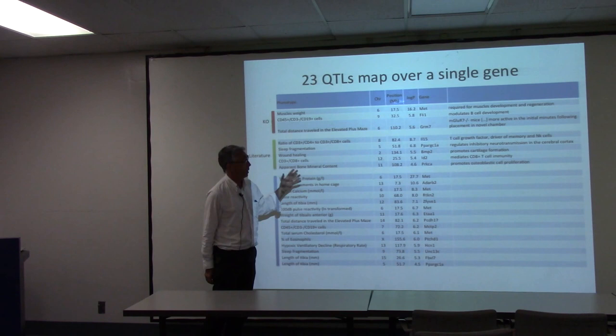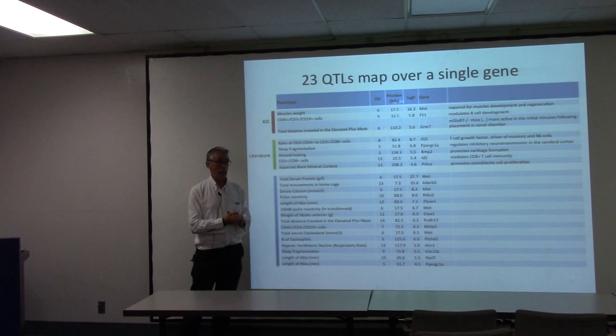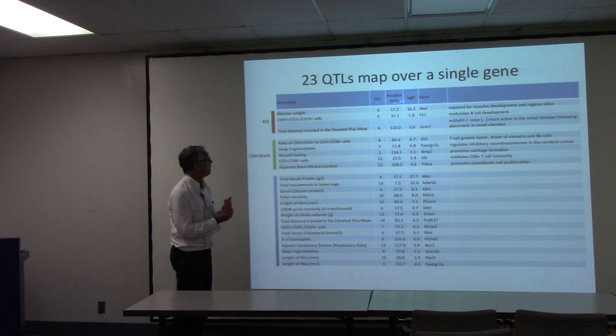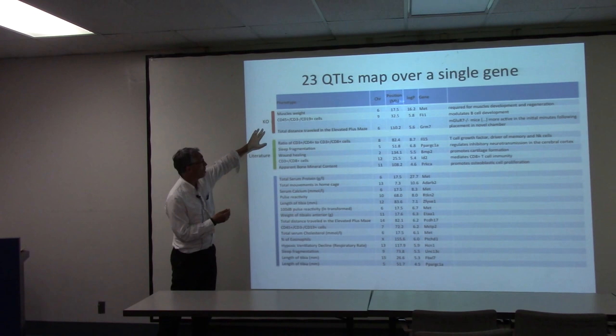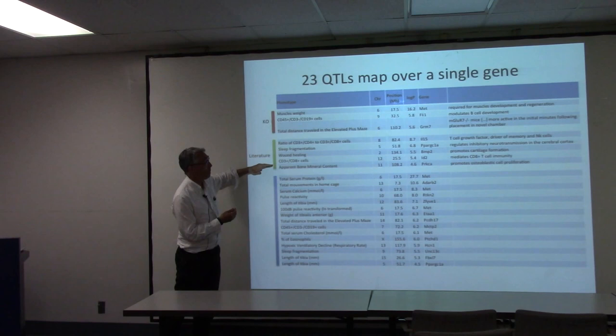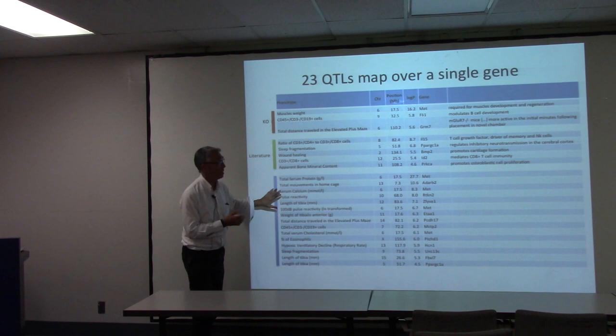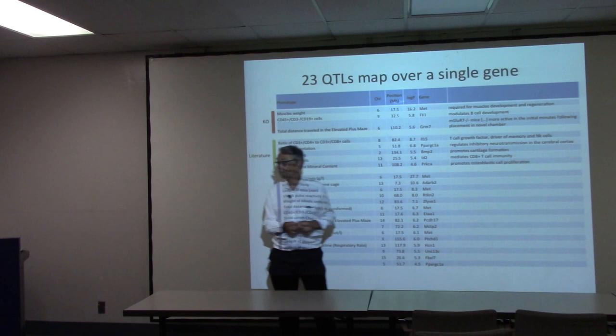This is a summary of 23 loci where we are mapping over a single gene — though we really don't know; just because the locus lies over a gene doesn't mean that's the gene. We've broken out the information by whether there was a known knockout with a similar phenotype or whether the literature had already implicated that gene, and in about half the cases that turned out to be so. This gives us some confidence that in the novel cases, some of these genes might indeed be important.